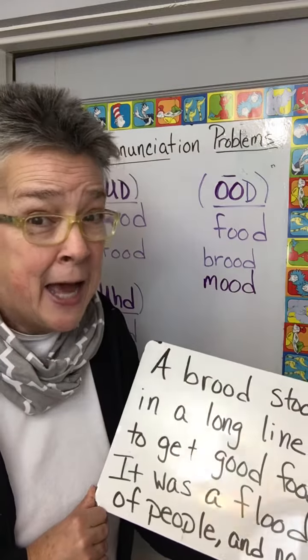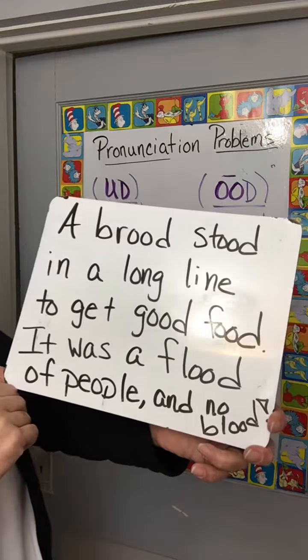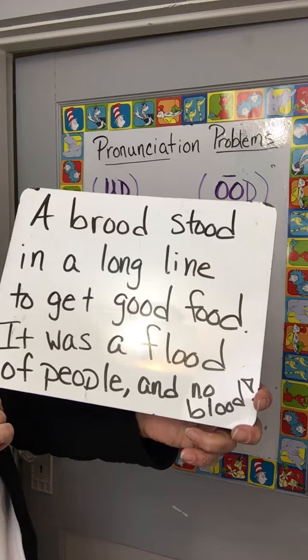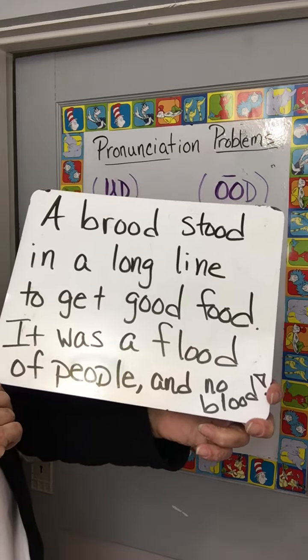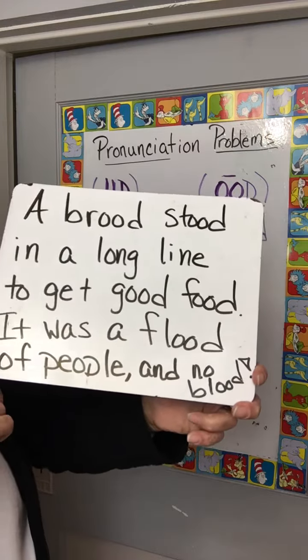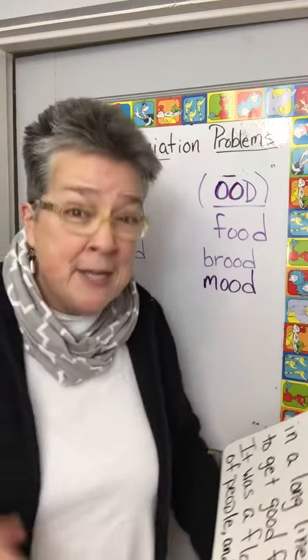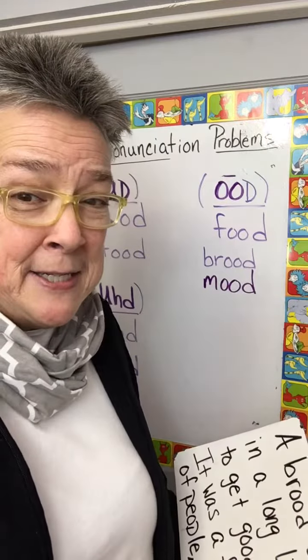Or one big sentence, I hope: 'A brood stood in a long line to get good food. It was a flood of people and no blood.' What? Come on, English.